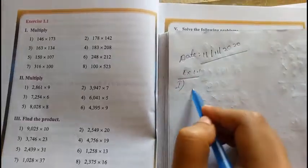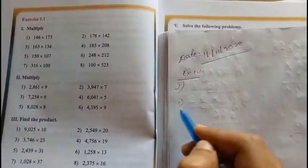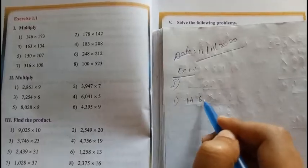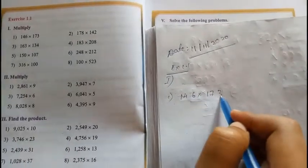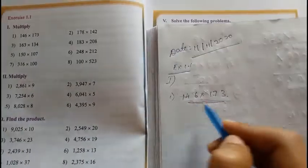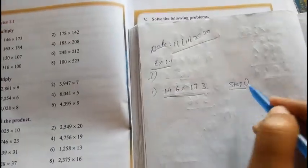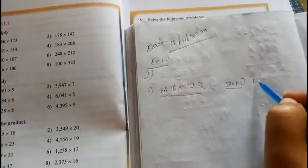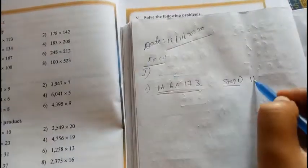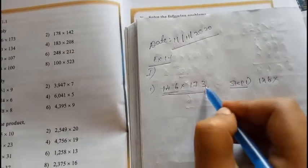Write the heading. In the first question we have 146 into 173. We need to write stepwise. In step 1, we are going to write this number same, 146, into the unit place digit from this.